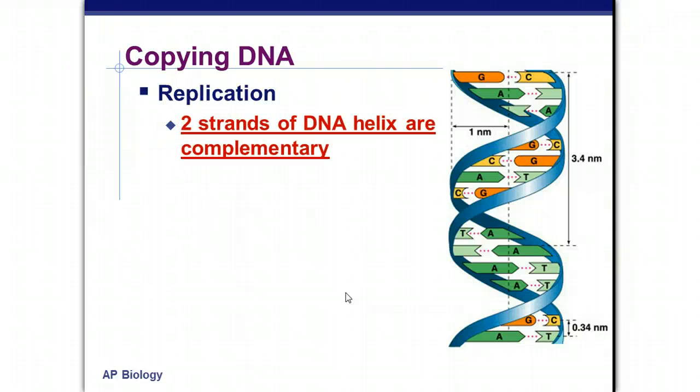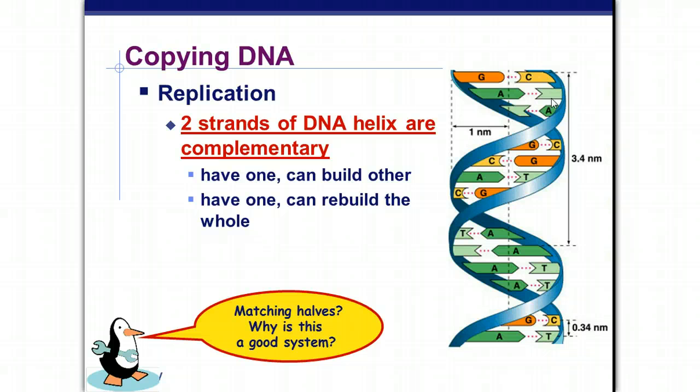So in copying DNA in replication, the two strands of the DNA helix are complementary. It doesn't mean that they're like, hey, you're really good looking. Like, hey, well, you're really smart. No, that has an I in it. Complementary means that they match up to one another. So one strand, there's a guanine. The other strand, there's a cytosine, adenine on one strand, thymine on the other. So if you have one strand, you could build the other strand. So the way that replication works is that if you have one strand, you could rebuild the whole double helix. And by matching halves, this is a good system because you don't end up having as many errors. And we'll model that for you in class tomorrow.